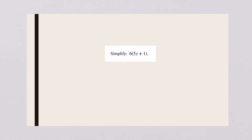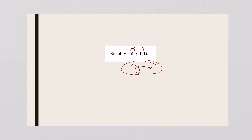This says I have six groups of these things. We hate to write that thing out six times, so the fast and easy way is to just multiply. Six times 5y is 30y. Six times a positive one is a positive six. That's as good as that gets — there are no other like terms to combine.